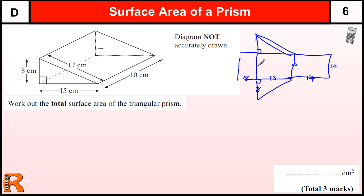To find the surface area, we need to work out the area of each of these rectangles and these two triangles. So this rectangle is 8 by 10 which is 80. This rectangle is 15 by 10 which is 150.